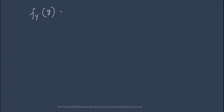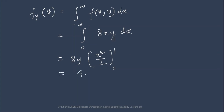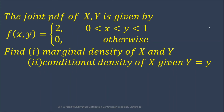Similarly, the marginal PDF of y is f_Y(y) = integration from minus infinity to infinity of f(x, y) dx. Here the x limits are 0 to 1 and f(x, y) = 8·x·y. So 8y is outside the integral, and integrating x dx gives x²/2, evaluated from 0 to 1, giving 4y for 0 < y < x.